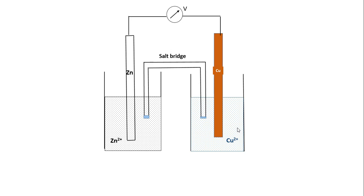Usually, the solution contained in the salt bridge will contain positive and negative ions, and the speed of the positive ion will be more or less identical with the speed of the negative ion. That is, the positive and negative ions present in the solution inside the salt bridge move with the same speed. This is a Daniel cell, and now we are going to go through the mechanism by which the Daniel cell operates.